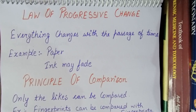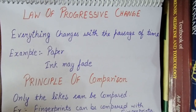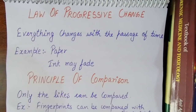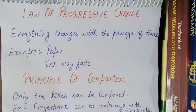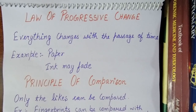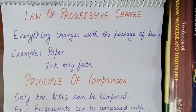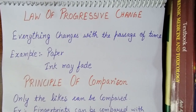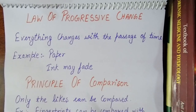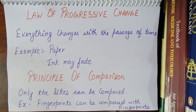Tire tracks and bite marks will fade. So it is very important to collect evidence at the correct time without delay. The Law of Progressive Change tells us that everything changes with time. If we don't collect a sample on time, that sample will get destroyed.